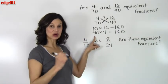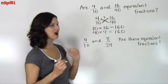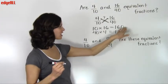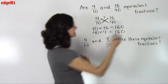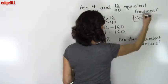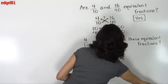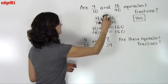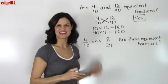So since the product of these two cross multiplications are equivalent or equal to each other, I can say that yes, these two fractions are equivalent fractions. And I'll erase my little question mark over it because I know now that these two fractions are equivalent.